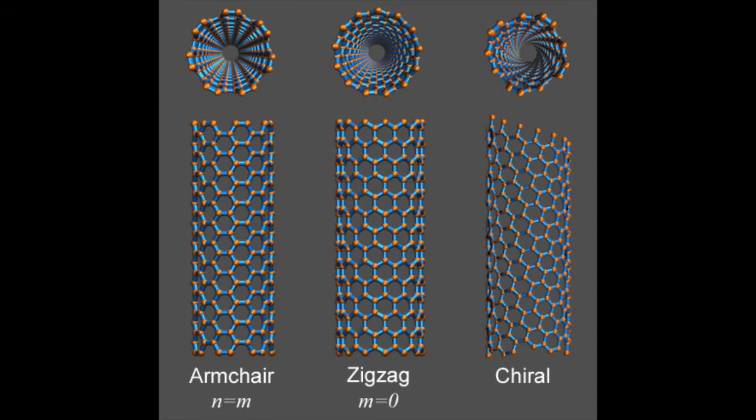Carbon nanotubes can be either metallic or semiconducting, depending on the way they're rolled. There are three different ways, called armchair, zigzag, and chiral. Armchair nanotubes are metallic. This would be bad for a transistor because it would no longer function as a switch, so they have to be removed. The other nanotubes are semiconductors.